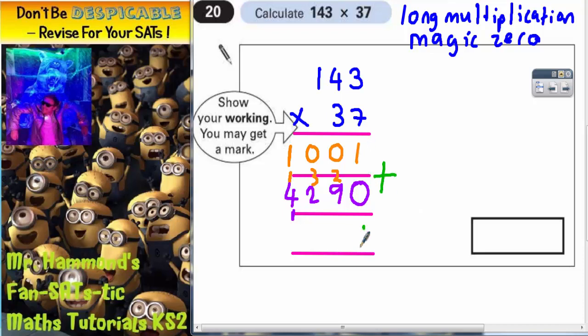So 1 plus 0 is 1. 0 plus 9 is 9. 0 plus 2 is 2. 1 plus 4 is 5. Notice when I'm actually adding these two rows up, I do not add these digits that I carried here. I didn't add that 1, I didn't add the 3, nor the 2, nor the 1. That's because I've already included them earlier on in the calculation. You don't include them again. So you only add up the large numbers that you've written on the answer lines in the spaces. So your final answer should be 5,291.